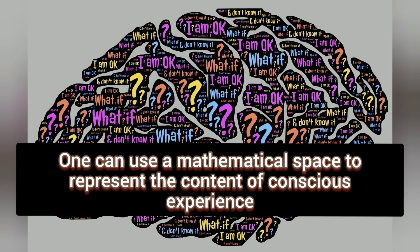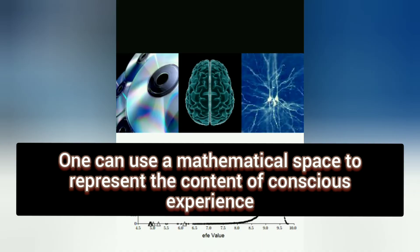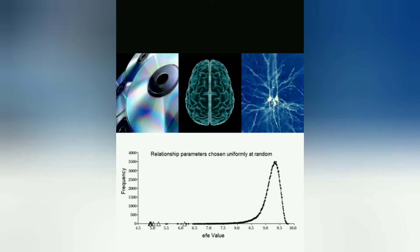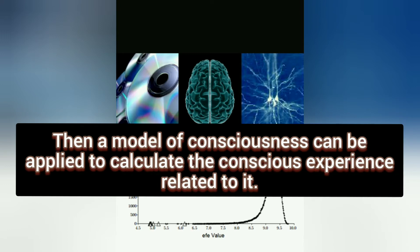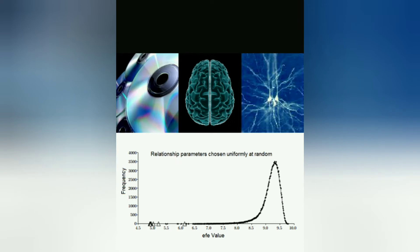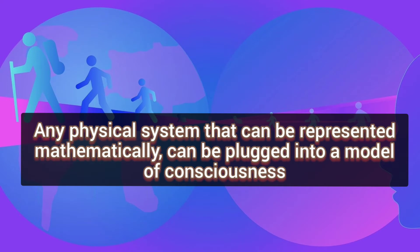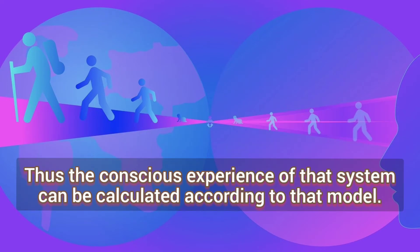One can use a mathematical space to represent the content of conscious experience. Suppose we have the mathematical description of a physical domain, for example the neural networks in the brain. Then a model of consciousness can be applied to calculate the conscious experience related to it. Any physical system that can be represented mathematically can be plugged into a model of consciousness.